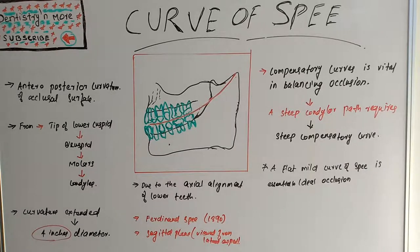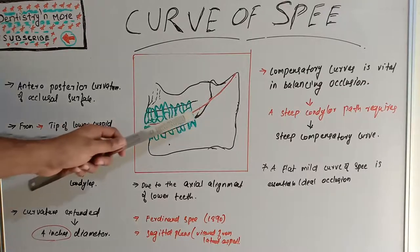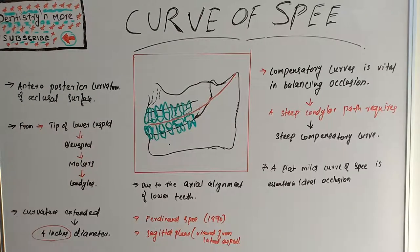The compensatory curves are determined by the inclination of the posterior teeth and their vertical relationship to the occlusal plane. That is how we plan our compensatory curve so that it becomes in harmony with the movement of the mandible guided by the condylar path.